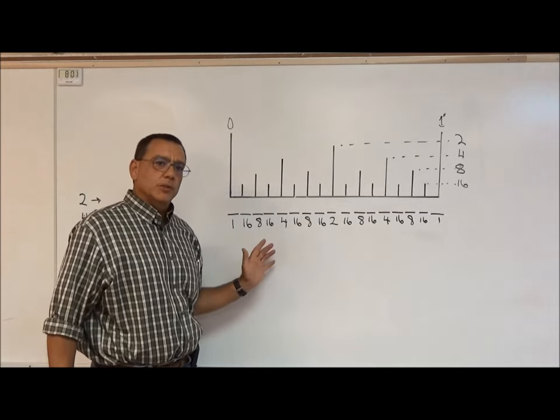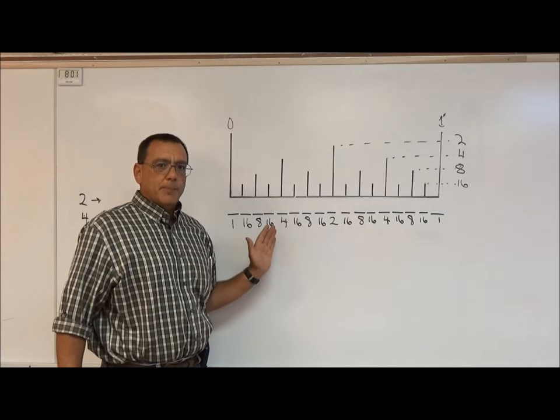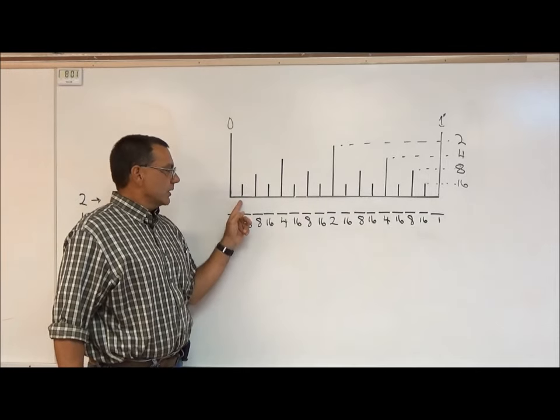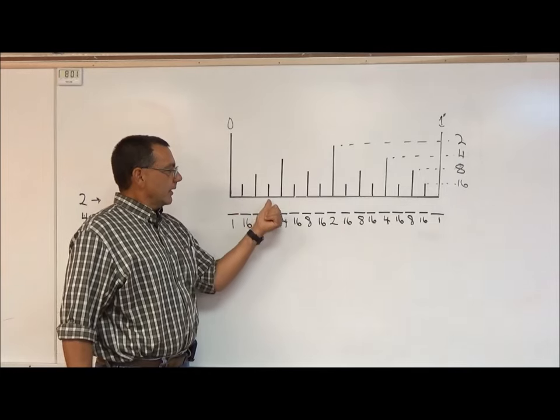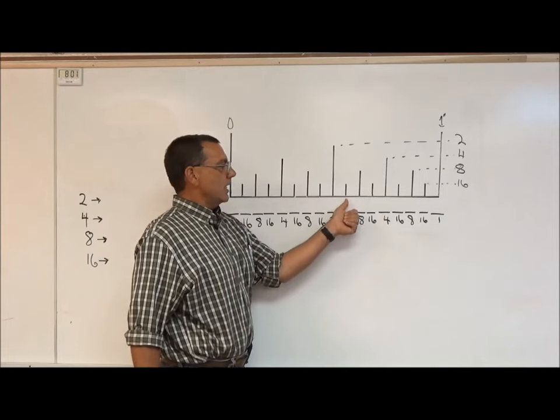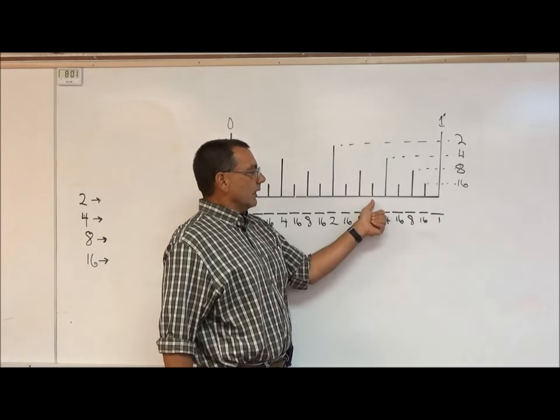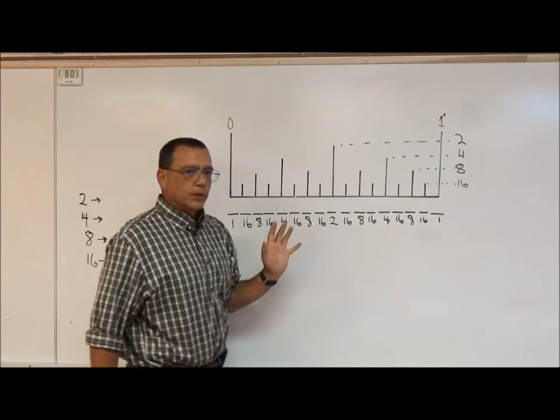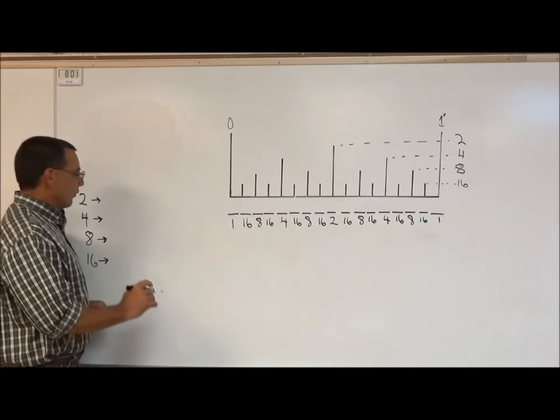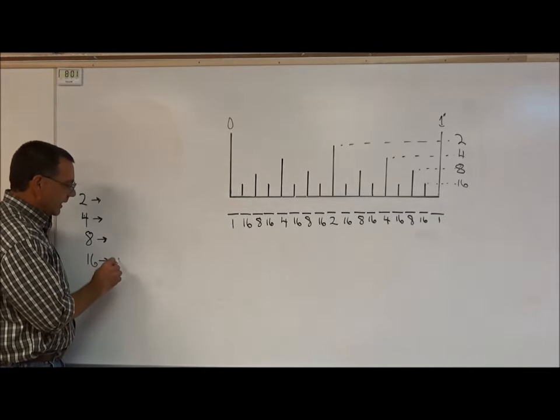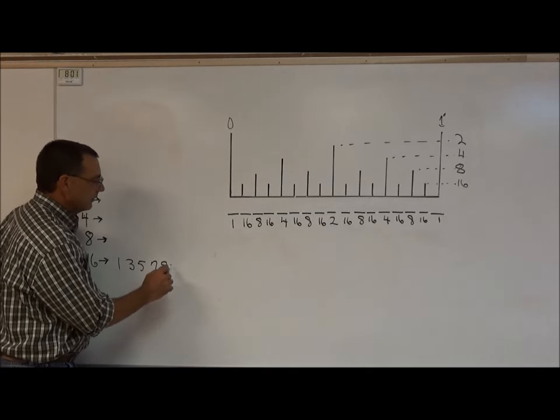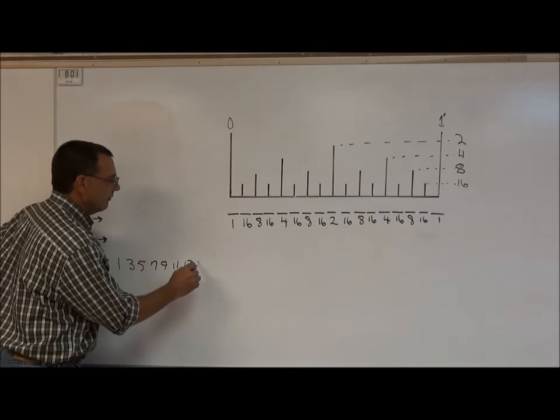So now all we need to do is figure out what the pattern is on the numerator. And if we look at this, this is one sixteenth, three sixteenths, five sixteenths, seven sixteenths, nine, eleven, thirteen, and fifteen. So when we look at what the patterns are for those denominators over here, the pattern for the sixteenths is one, three, five, seven, nine, eleven, thirteen, and fifteen. So it's an odd number that simply increases, that's the pattern.